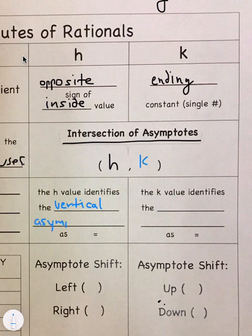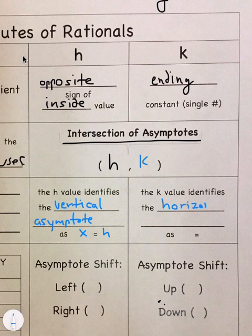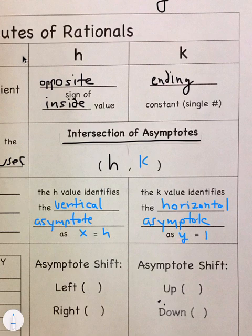And it's still shifting left and right, but that line is up and down where x equals h. And the k value identifies the horizontal asymptote. So this is still talking about shifting up and down, but that line is moving left and right. So it's the horizontal asymptote as y is equal to k.